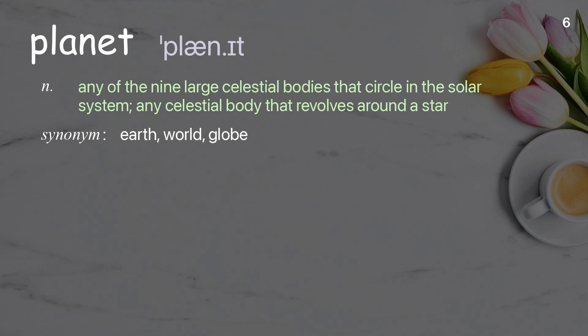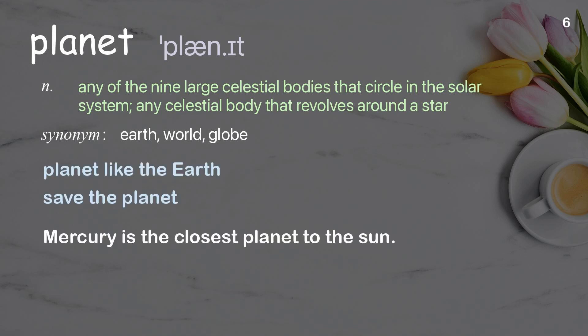Planet: Any of the nine large celestial bodies that circle in the solar system, or any celestial body that revolves around a star. Examples: Planet like the Earth. Save the planet. Mercury is the closest planet to the sun.